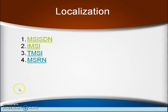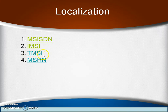These numbers are: MSISDN, IMSI, TMSI, and MSRN. MSISDN is the Mobile Station Subscriber International ISDN Number. IMSI is the International Mobile Subscriber Identity. TMSI is the Temporary Mobile Subscriber Identity, and MSRN is the Mobile Subscriber Roaming Number.